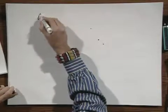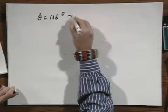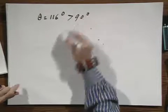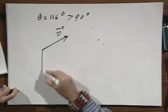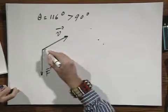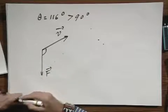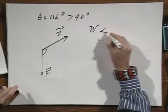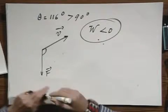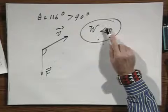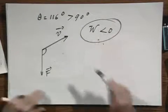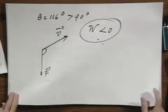And I find that cosine theta leads to a value for theta which is 116 degrees, which is larger than 90 degrees. So the situation that we have is that V is in this direction, and F is in this direction, so that this angle is larger than 90 degrees. And the conclusion therefore is that this force does negative work.